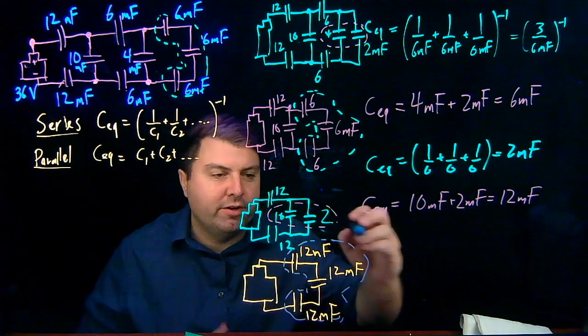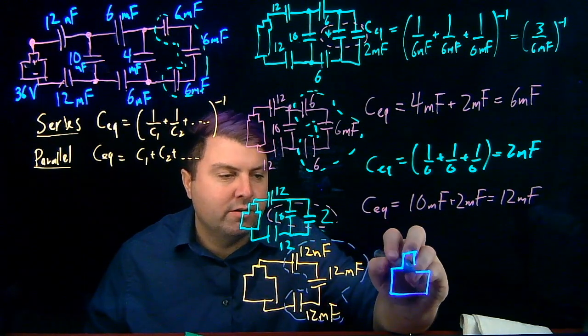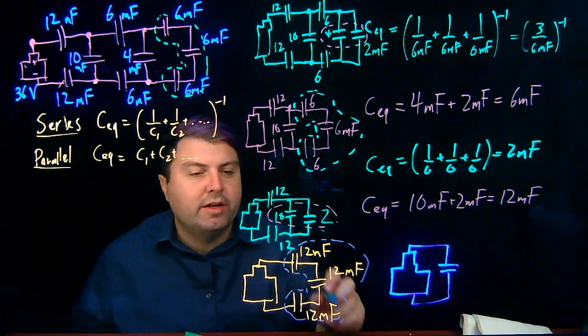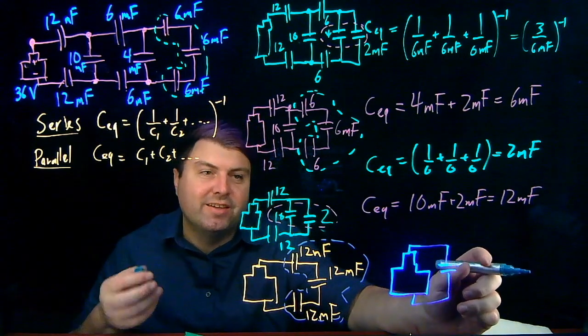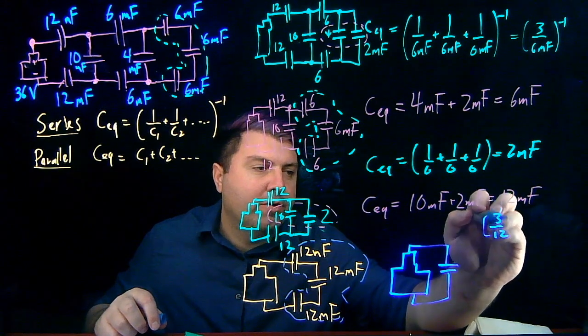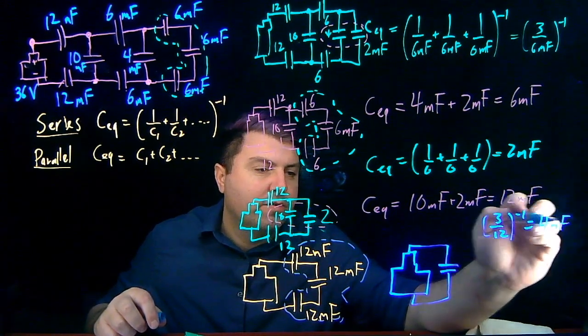So I can redraw this just as a single circuit with a single capacitor. And 1 over 12 plus 1 over 12 plus 1 over 12 is 3 over 12 to the minus 1, which gives us 4 millifarads.